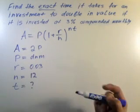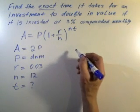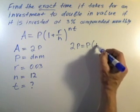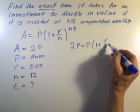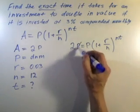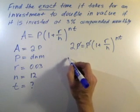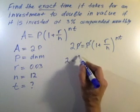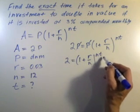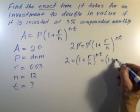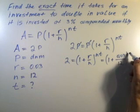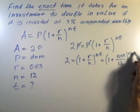We're going to substitute A for 2P and rewrite this formula as follows: 2P = P(1 + R/N)^(NT). P and P cancel, and we get 2 = (1 + 0.03/12)^(12T).